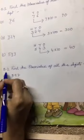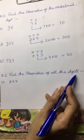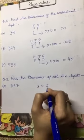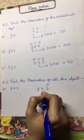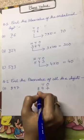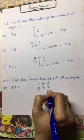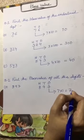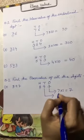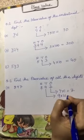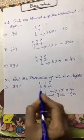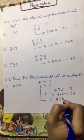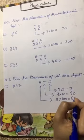Now question number 2: find the place value of all the digits. First we will write down the position of all the numbers. Number 7 is in 1's place, number 9 is in 10's place, and number 8 is in 100's place. So the place value of number 7 is 7 into 1, which is equal to 7. The place value of number 9 is 9 into 10, which is equal to 90. And the place value of number 8 is 8 into 100, which is equal to 800.